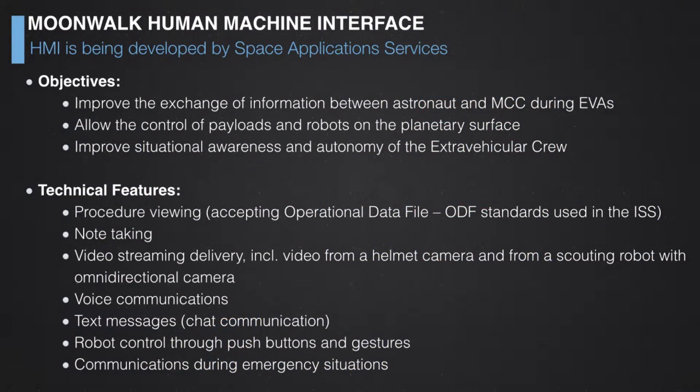The human-machine interface also implements robot control through push buttons on the chest or wrist display, allowing the astronaut to command the rover and view its video stream. Gesture control is also supported, allowing the astronaut to indicate to the rover where to go without pushing buttons. An emergency display with particularly large, highly visible buttons is also included for situations where the astronaut loses voice communications, allowing continued communication with the crew and mission control.